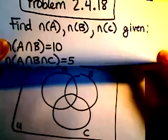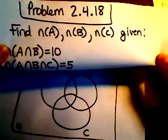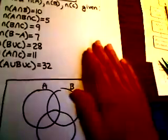They essentially want us to find the number of elements in A, B, and C, given this list of information right here.